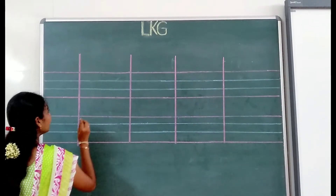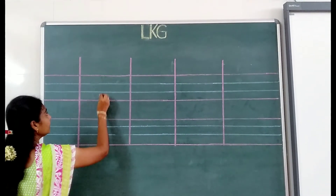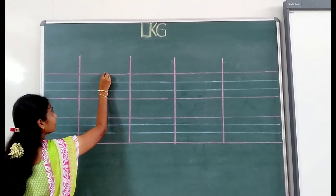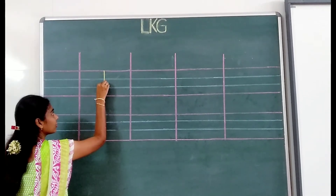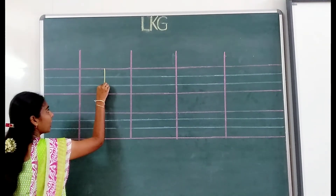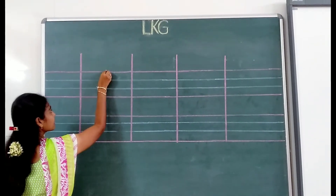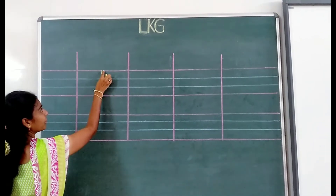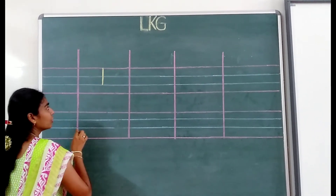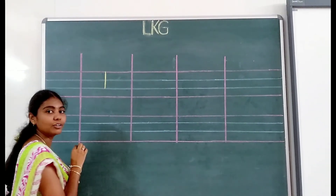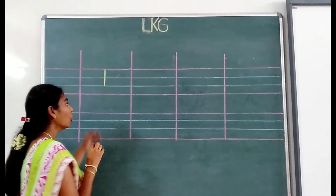For writing capital I, you have to write a standing line. First, what you have to write — a standing line from red line to blue line. From red line to blue line.